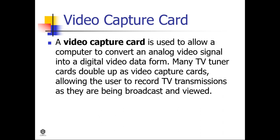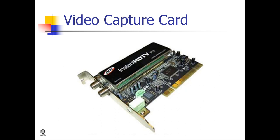Next, the video capture card. A video capture card is used to allow a computer to convert an analog video signal into a digital video data form. Many TV tuner cards double up as video capture cards, allowing the user to record TV transmissions as they are being broadcast and viewed. The inclusion of a dedicated video card is important in a system as the circuitry required to convert analog video to digital video is quite specialized and high performance. Data must be digitized and modified to account for color differences and encoded to a completely different format, as well as separating the different aspects of composite video if this is captured.